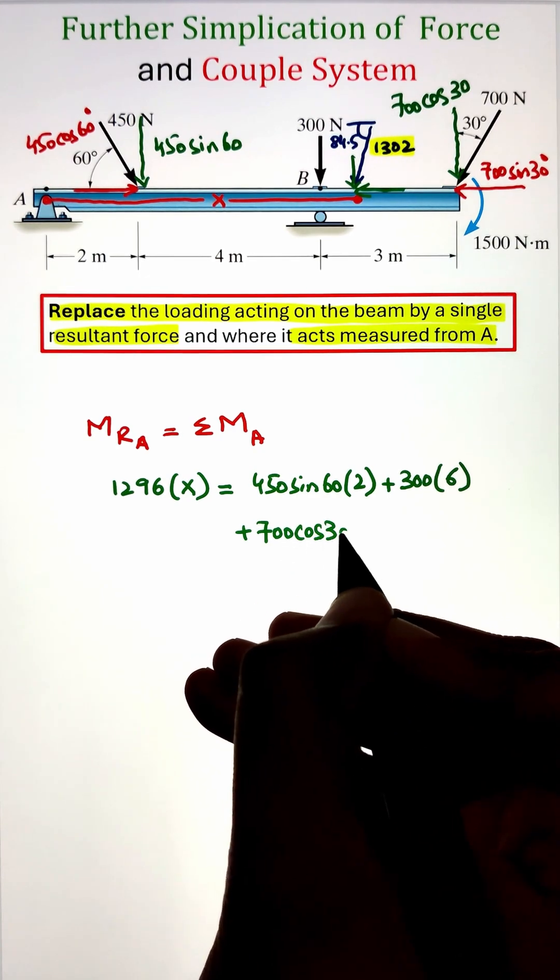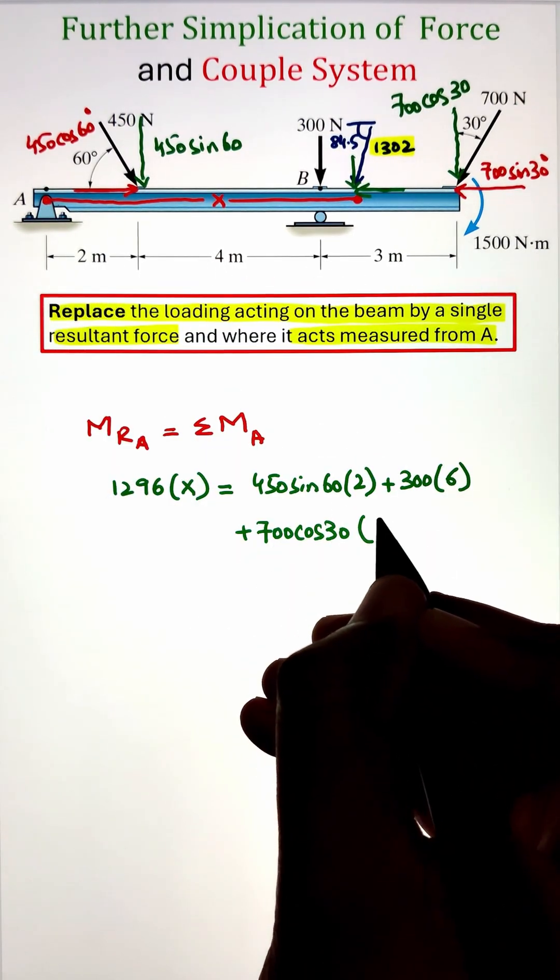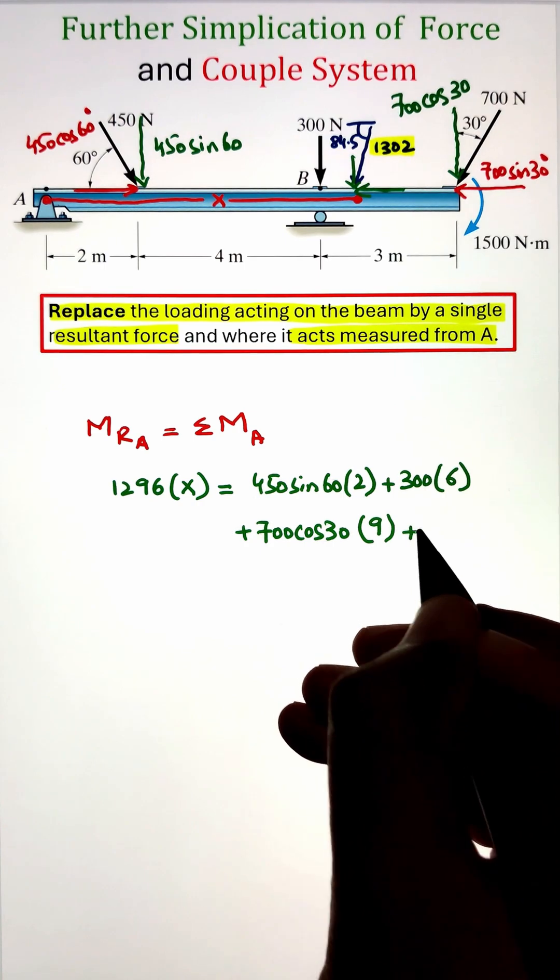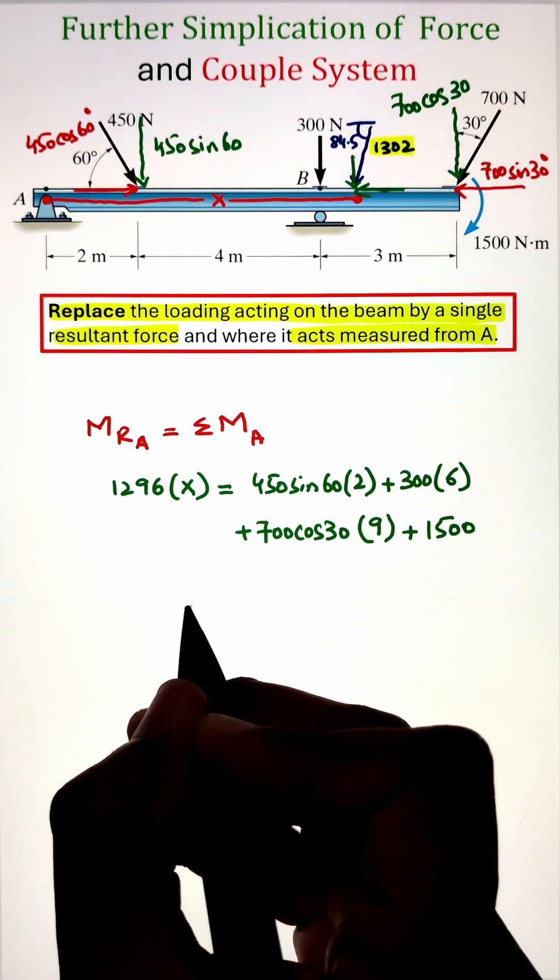Whereas 700 cos 30 newton force is also making a clockwise moment with a moment arm of 9. Finally I have an external couple moment acting at the very end of the beam having a value of 1500 newton meter also going in the clockwise direction.